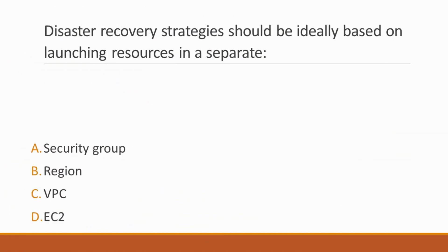Next question: Disaster recovery strategies should ideally be based on launching resources in a separate — Options: A. Security Group, B. Region, C. VPC, D. EC2. Correct answer is option B, Region, because regions are placed all around the world to provide cloud-based disaster recovery services that enable rapid recovery of your infrastructure and data.